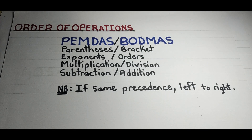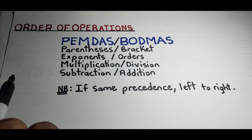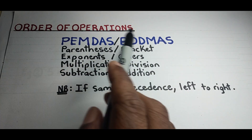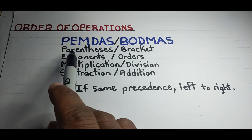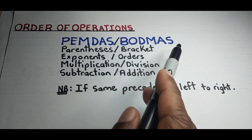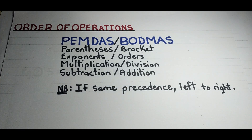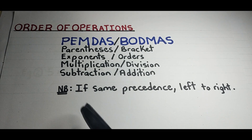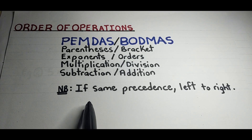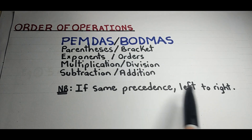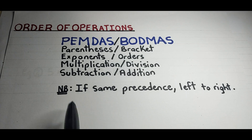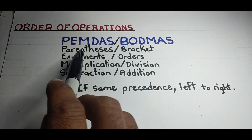Here we have the order of operations, commonly referred to as PEMDAS or BODMAS. These abbreviations represent Parentheses, Brackets, Exponents, Orders, Multiplication, Division, Addition, and Subtraction. An important rule that many are not familiar with is that if we have two operations of the same precedence, we work those from left to right.